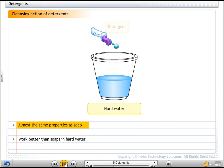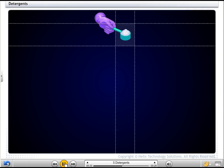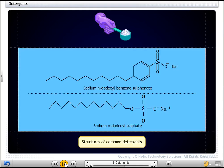Detergents have almost the same properties as soaps but they are more effective in hard water. Detergents consist of long chain molecules such as sodium n-dodecyl benzene sulfonate and sodium n-dodecyl sulfate. The charged ends of these compounds do not form insoluble precipitates with the calcium and magnesium ions in water.